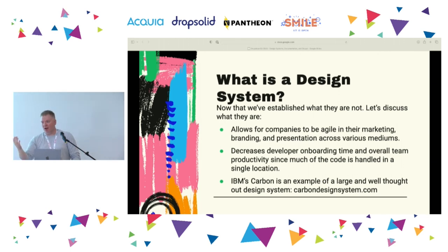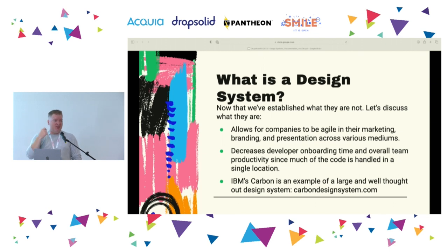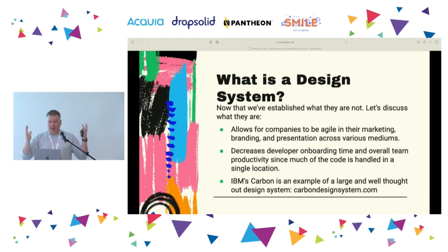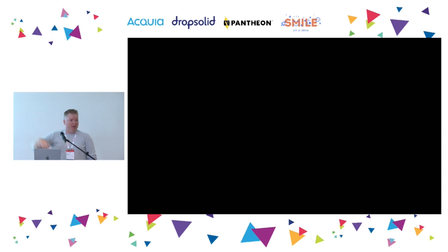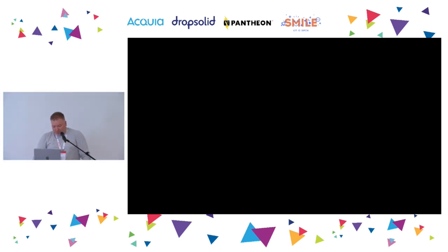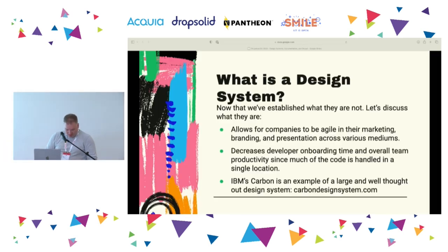Before design systems, I had a client that changed colors literally every week, so I wrote a Sass function I called 'rainbow' that would just spit out all the colors and feed them into the CSS. Design systems eliminate that because you have one place where everything is defined.